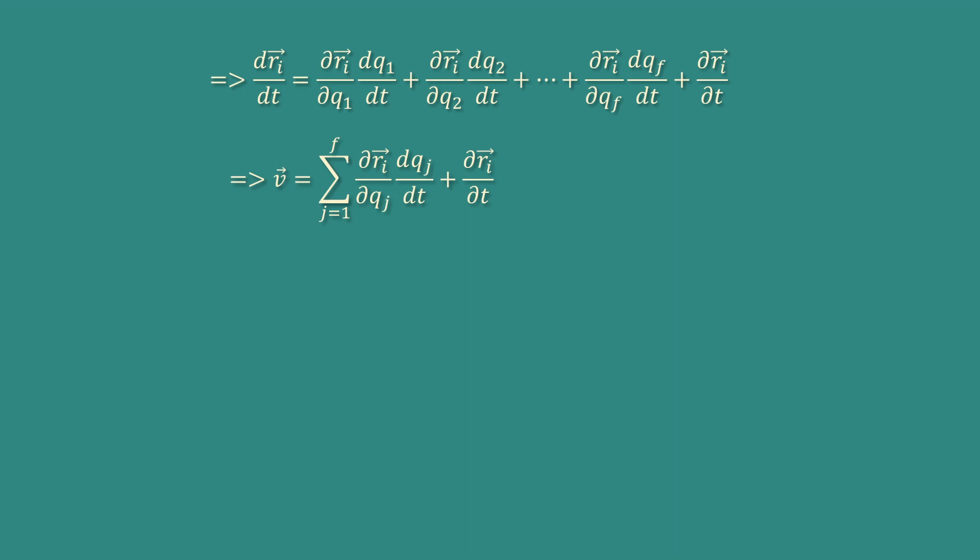Which implies v equal to summation j goes from 1 to f into del ri by del qj, and in place of dqj by dt we can write qj dot, plus del ri by del t, where the term qj dot is called the generalized velocity.